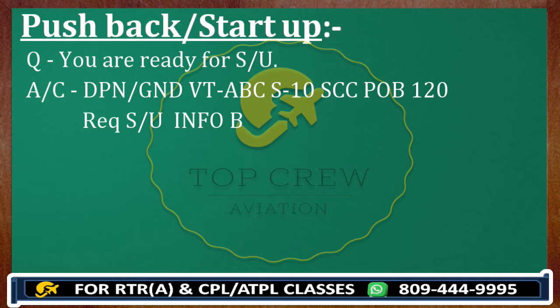Let's repeat it once again: Delhi Ground, Victor Tango Alpha Bravo Charlie, stand one zero, security check carried out, persons on board one two zero, request startup info Bravo. Victor Tango Alpha Bravo Charlie, Delhi Ground — your FIC and ADC number has expired.